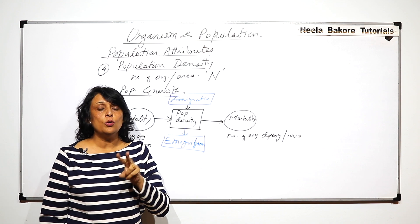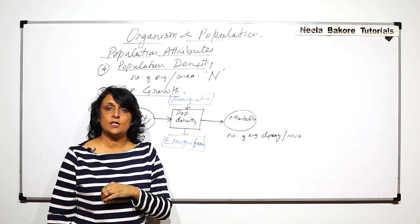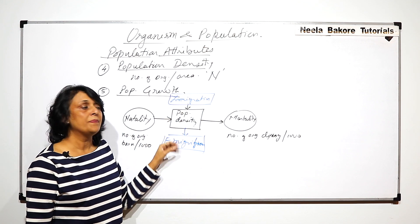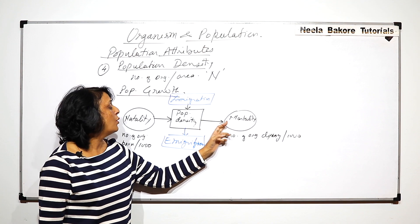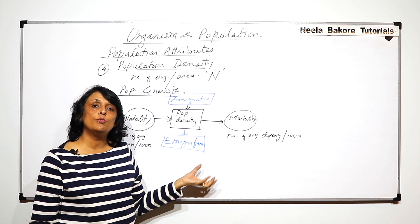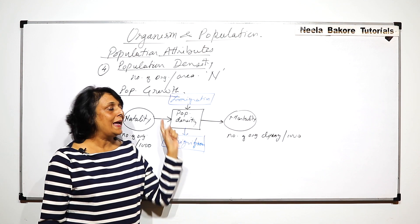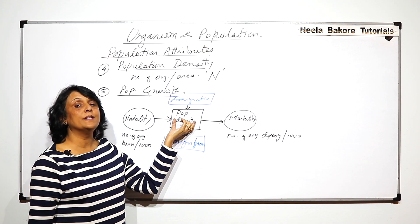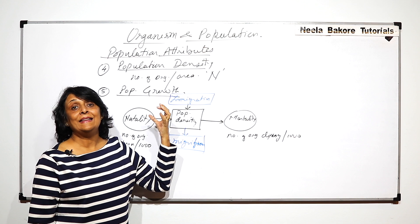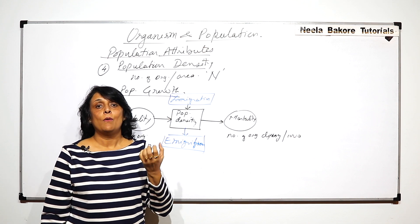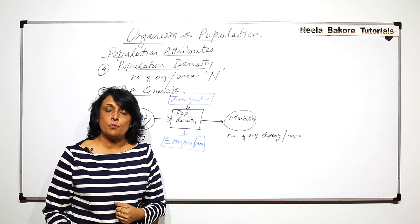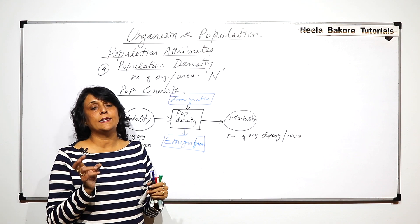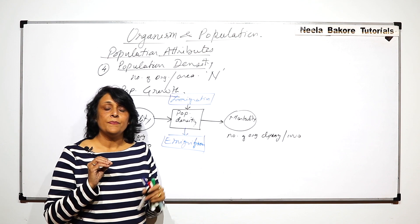So there are two things which add into the existing population and two which remove. It is the birth rate or natality and immigration which add, and mortality and emigration which remove. The sum of this would give us what is happening to the existing population and that would decide what is going to be the growth of this population.